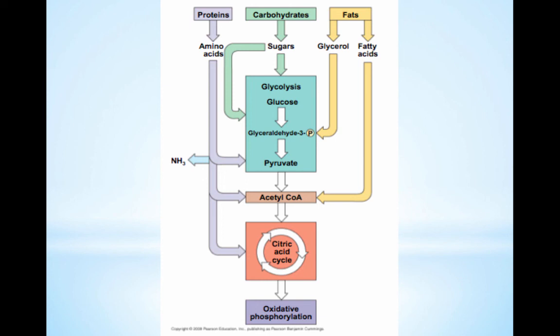Proteins can be used for fuel after being digested into amino acids. Most amino acids are used to build proteins, but leftovers may be converted to other organic molecules. Amino groups can be used to make other compounds or disposed of in urine, and the remaining parts of amino acids are converted to pyruvic acid, acetyl coenzyme A, or other organic acids in the Krebs cycle. Fats are excellent fuel — the cell hydrolyzes fat into glycerol and fatty acids. Glycerol can be turned into G3P, an intermediate in glycolysis, and fatty acids into acetyl coenzyme A, which enters the Krebs cycle. One gram of fat has twice as much energy as one gram of starch.